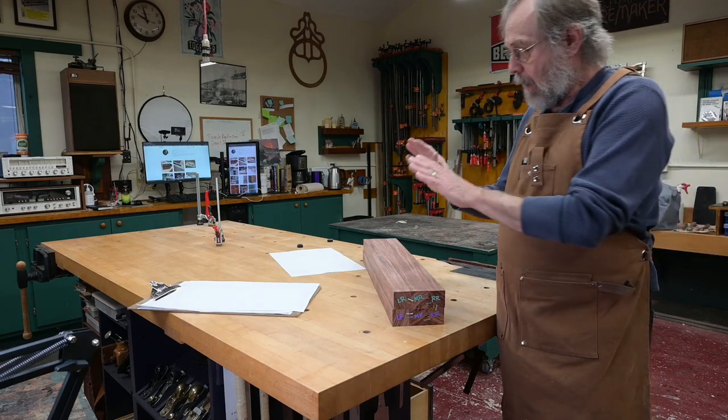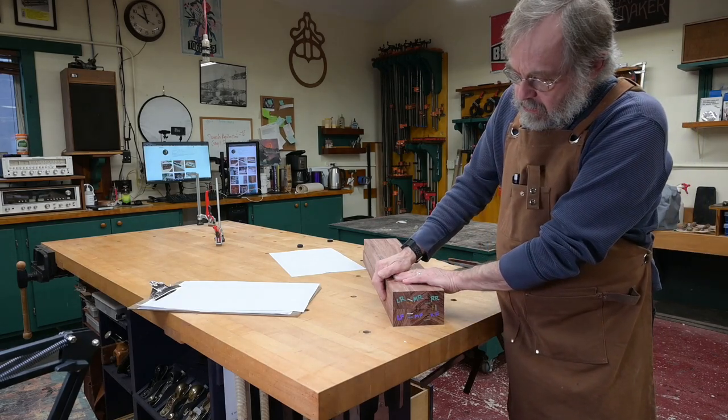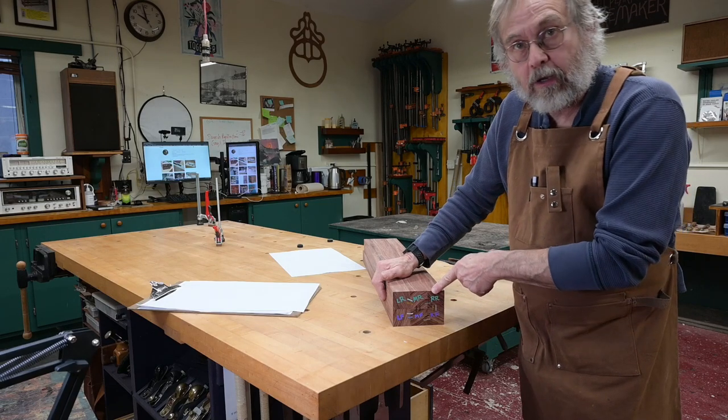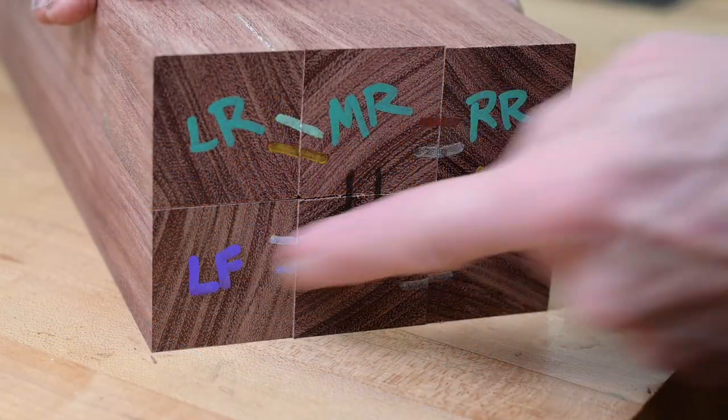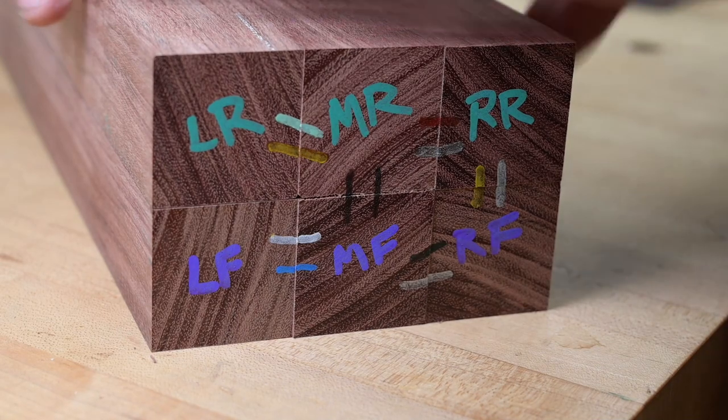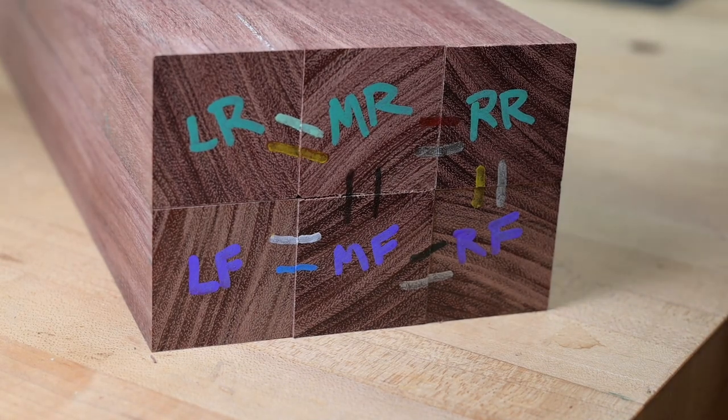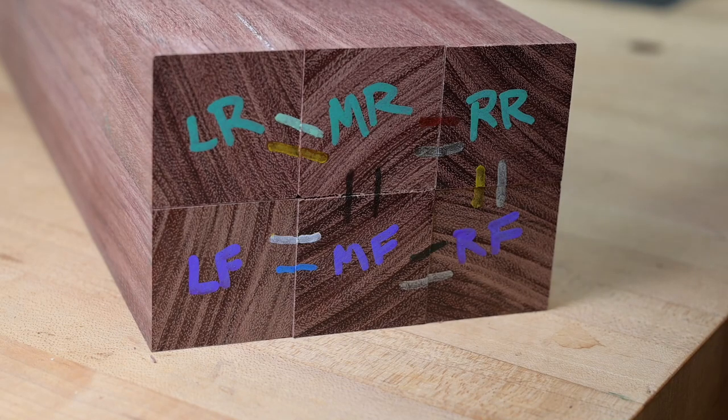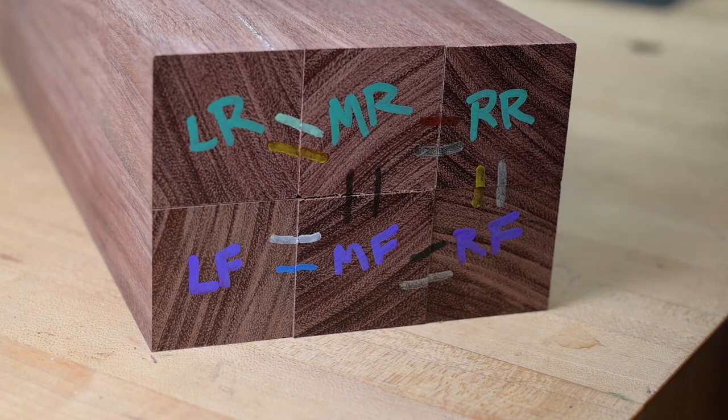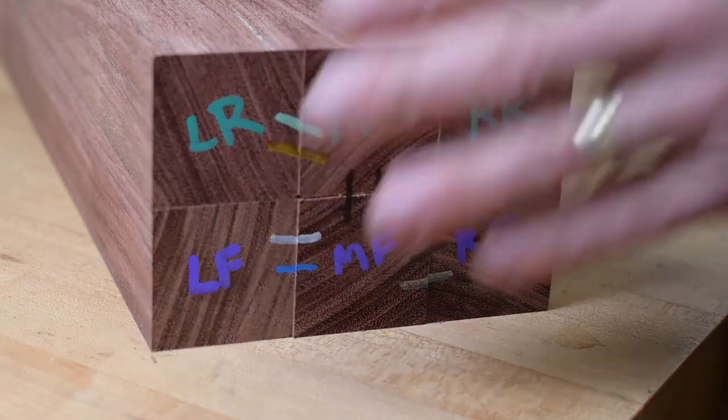So as you can see, let's take a closer look down here. I've got some markings here I want to show and explain. These markings help me orient the legs. There are six legs here. Each one gets some sort of different machining, and I want to be able to take them apart, put them back together real quick and get them in their orientation.